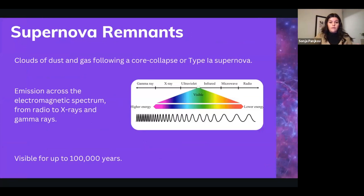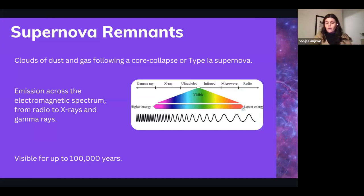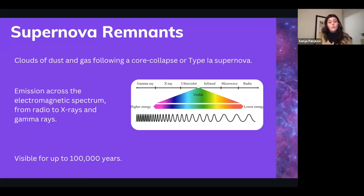Supernova remnants are clouds of dust and gas that remain following either a core collapse or Type Ia supernova. They're special because they emit across the entire electromagnetic spectrum — from low-energy radio waves with long wavelengths and low frequencies, all the way through visible light, X-rays, and gamma rays. This is due to a range of different physical processes. Importantly, they're visible for up to a hundred thousand years, which has significant implications for observational studies.